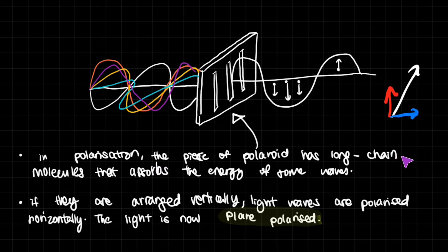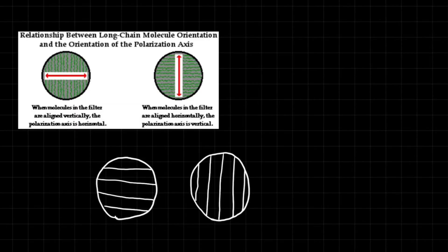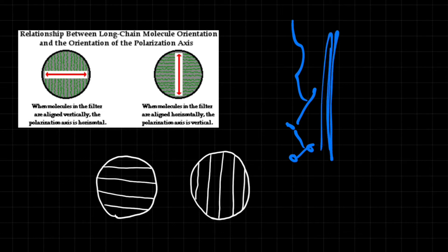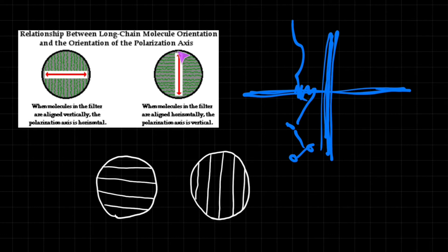In polarization, the Polaroid has long chain molecules that absorb the energy of some waves. These are actually plastic Polaroids, and plastics are made out of long chains of molecules that you can arrange in different ways. If you arrange them vertically, then light waves are going to be polarized horizontally — the light is now plane polarized. If you align the molecules vertically, only the horizontal electric field wave will come through, because light waves oscillating vertically are completely absorbed by the vertical chain, while horizontal waves are only minimally absorbed and can come through. If the molecules are arranged horizontally, vertical light comes through — it's just an opposite relationship.